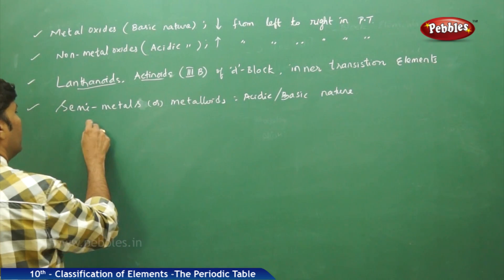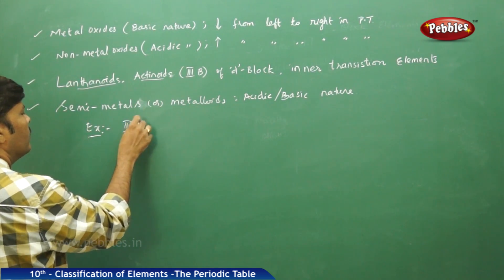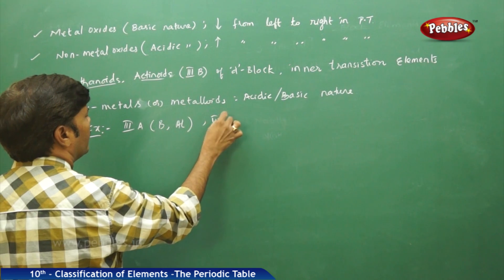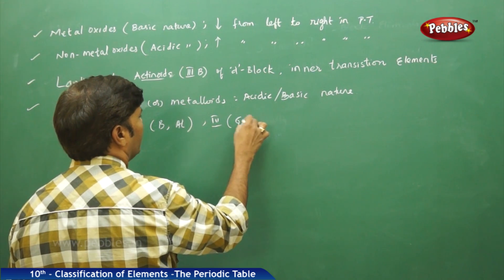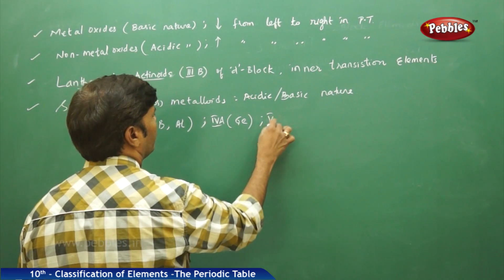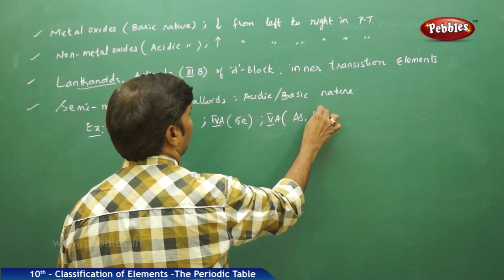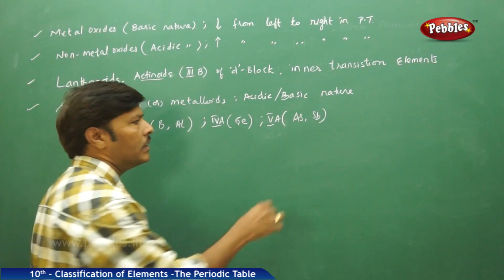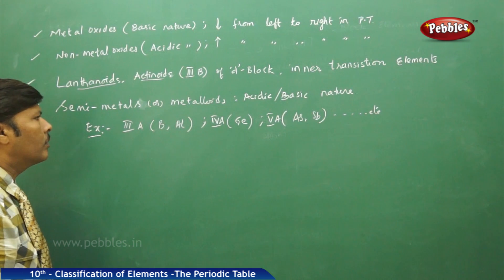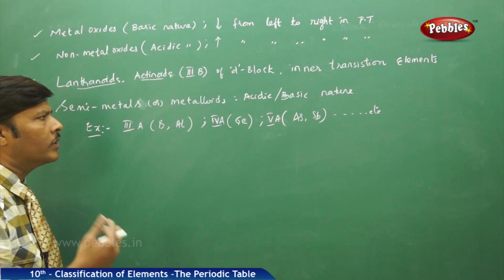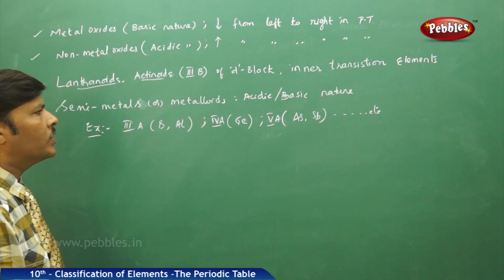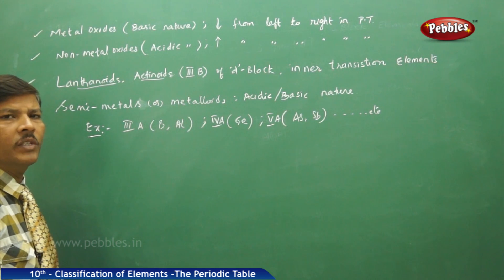The best examples are in the third A group — boron and aluminium. In the fourth A group — germanium, arsenic, and antimony, and so on. All these are examples of semi-metals or metalloids. Because they show the property of both acidic and basic nature, that is the reason we call them metalloids.